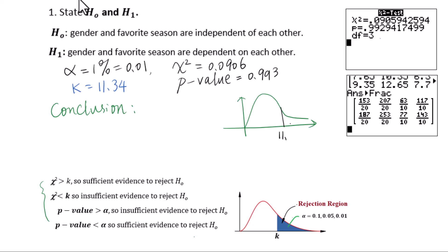The critical value is 11.34, and this is the rejection region. If chi-square or p-value is located in the shaded area, then reject H0; otherwise, do not reject H0 — never accept H0. The shaded area under the curve represents the significance level, 0.01.